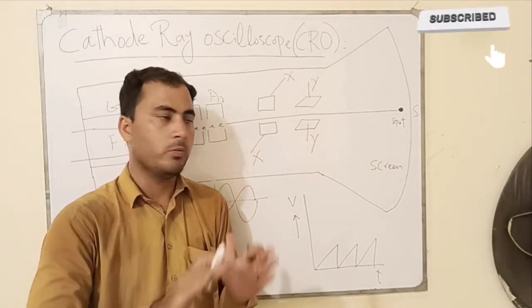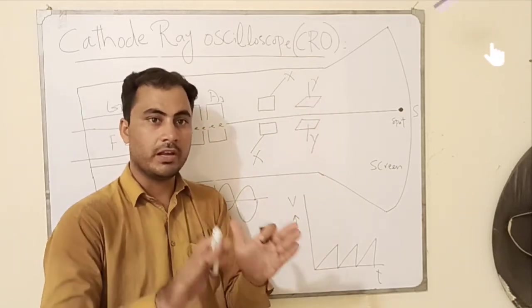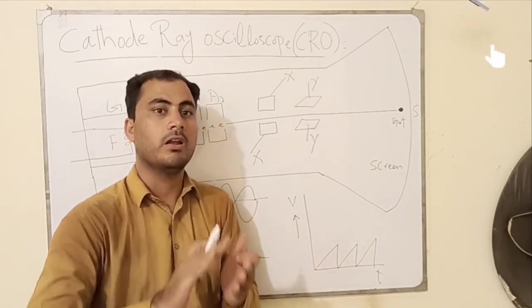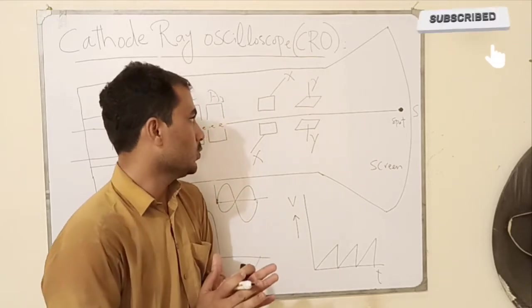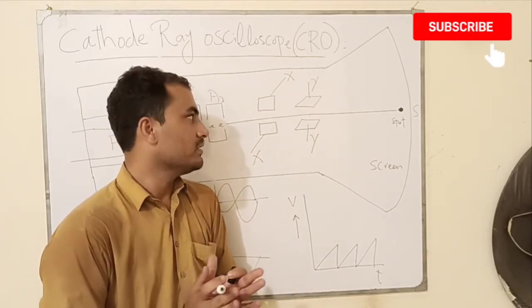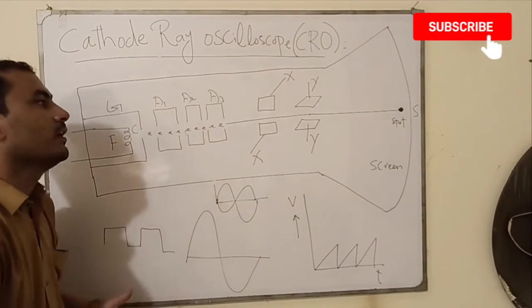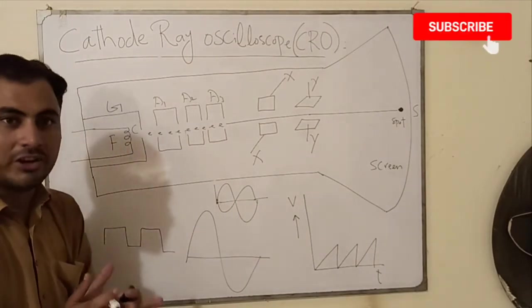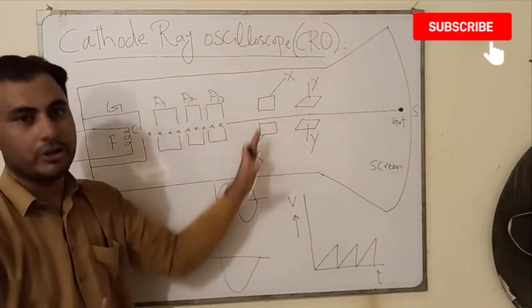With the help of X plates we can deflect the beam of electrons along X axis and with the help of Y deflecting plates we can deflect the beam of electrons along Y axis. So it means that we can obtain our desired signal with help of this arrangement.